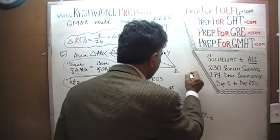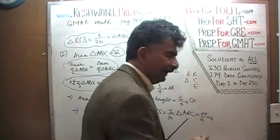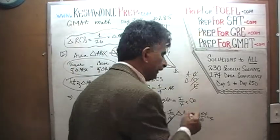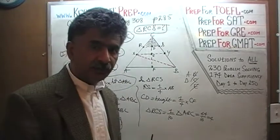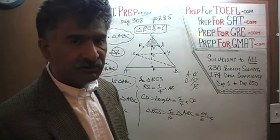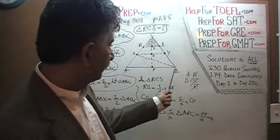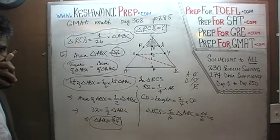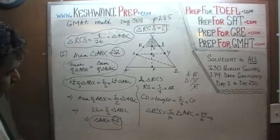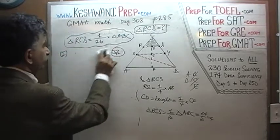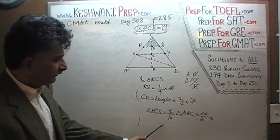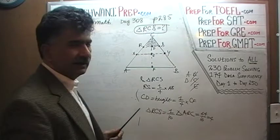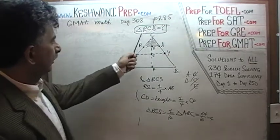Now that we have established that the first statement by itself is enough, we know the answer cannot be B, C, or E — it must be either A or D. Let's look at the second statement. If the second statement is also sufficient, the answer is D; if not, the answer is A. I need a quick break — all the information from Statement 1 has to go, but the setup from the problem itself stays.